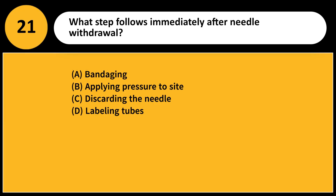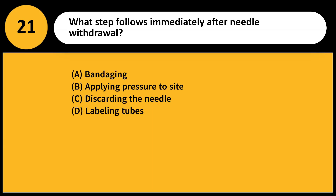What step follows immediately after needle withdrawal? A. Bandaging. B. Applying pressure to the site. C. Discarding the needle. D. Labeling tubes. Answer: B. Apply pressure immediately to stop bleeding and avoid hematoma formation.